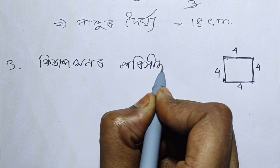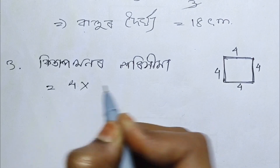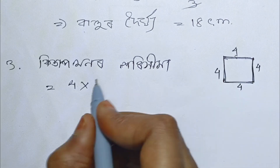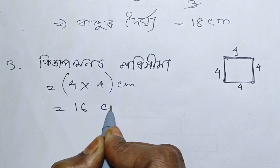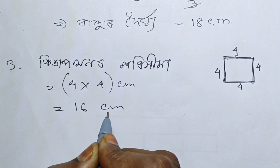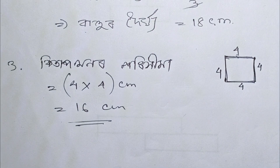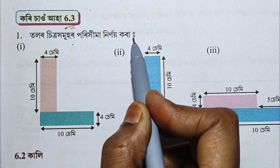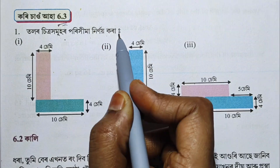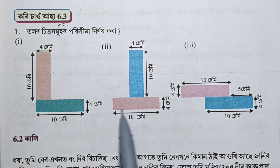For a square with side 4 cm, the perimeter is 16 cm. Another figure has sides 6.3 cm, 6.3 cm, and 3 cm.